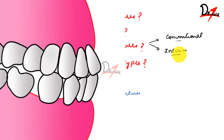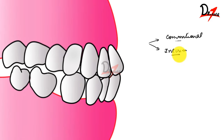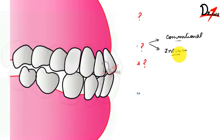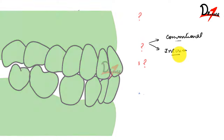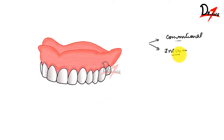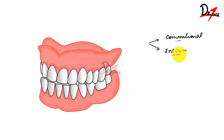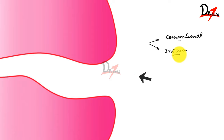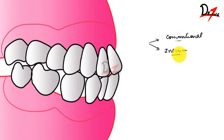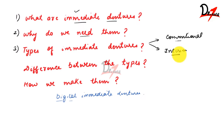In the interim immediate denture, we take the impression before extraction of the teeth, make a complete denture, and when the patient comes we extract all teeth — both anterior and posterior — and give the denture at the same time. So we have two types: conventional and interim.